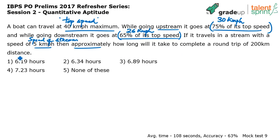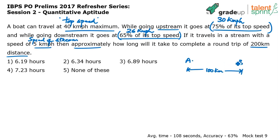Then approximately how long will it take to complete a round trip of 200 kilometers? What do you mean by round trip of 200 kilometers? From point A to point B the distance is 100, you go from A to B and back from B to A. So 100 plus 100 makes 200 — round trip of 200 kilometers means one side distance is 100.